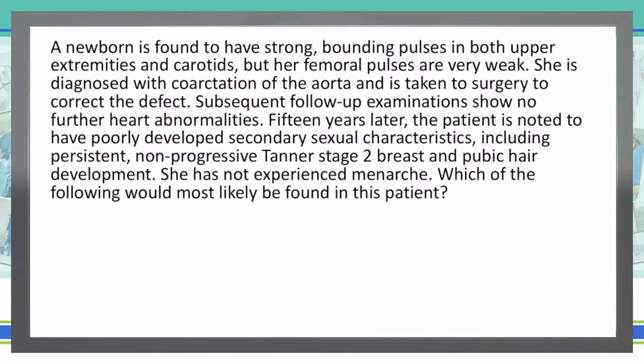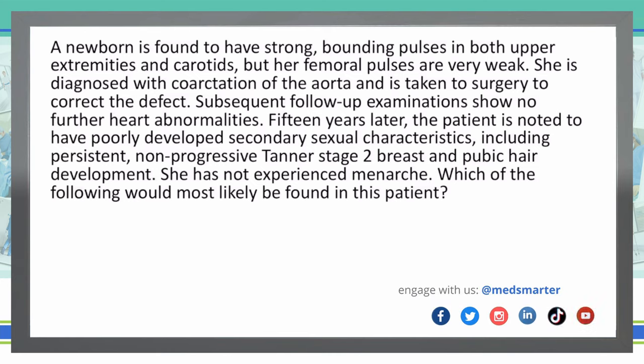15 years later, the patient is noted to have poorly developed secondary sexual characteristics, including persistent, non-progressive Tanner stage 2 breast and pubic hair development. She has not experienced menarche. Which of the following is most likely to be found in this patient?